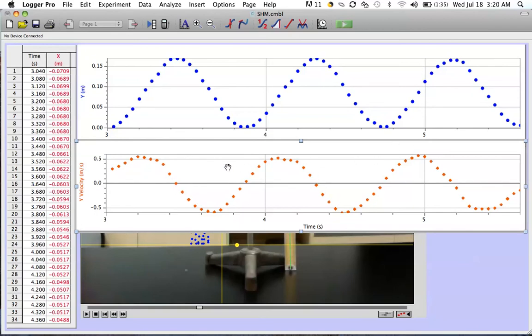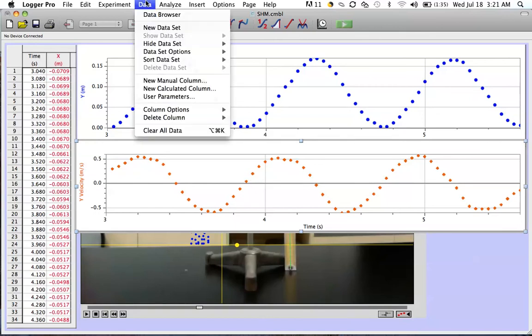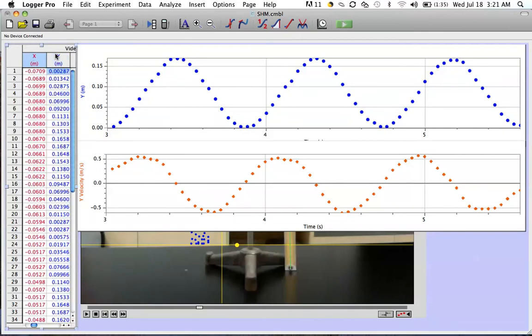Now Logger Pro automatically does displacements and velocities, but to do acceleration we've got to have Logger Pro calculate the acceleration as the object was moving. And to do that, what we're going to do is go to data and then insert a new calculated column. Now I've already done that here.